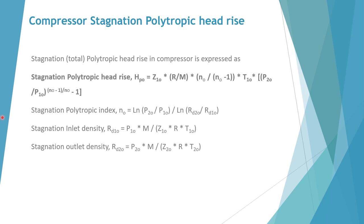Now the compressor stagnation polytropic head rise can be written as: Hpo equals z1o into r by m into no upon no minus 1 into t1o, multiplied by the bracket p2o upon p1o to the power no minus 1 upon no, minus 1. The stagnation polytropic index no equals log of p2o upon p1o, divided by log of rdo upon rd1o. The inlet stagnation density rd1o equals p1o into m upon z1o into r into t1o, and the stagnation outlet density rd2o equals p2o into m upon z2o into r into t2o.